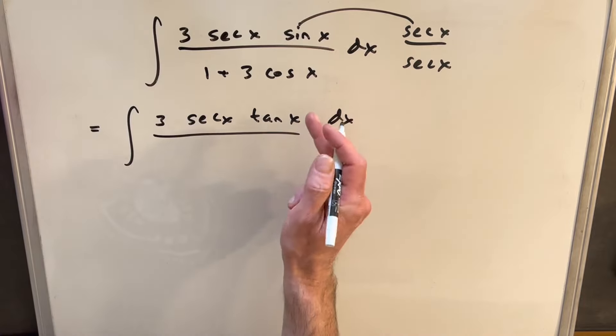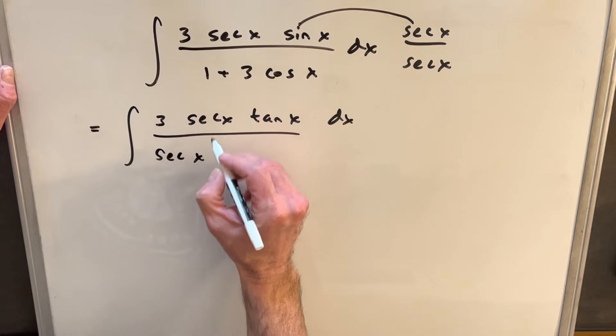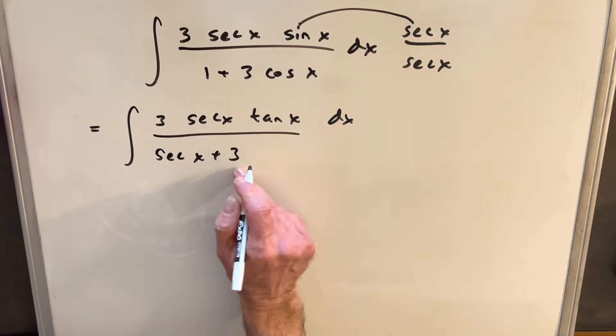And then in our denominator, we're going to have secant x times 1 is just secant x. And then plus 3, secant x times cosine x is just 1. So we're just going to leave a 3 there. And by doing that, this is starting to look a lot better.